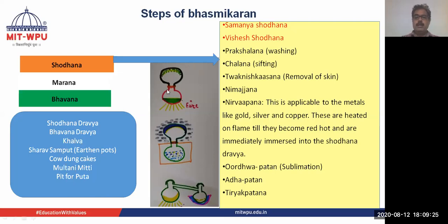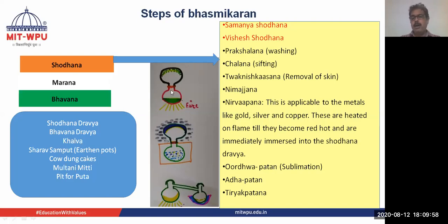In Urdhva Patan, two earthen pots are taken — one earthen pot and one in the inverted position. The drug is kept in the lower earthen pot and the edges are sealed with Multani Mitti, with cloth smeared in Multani Mitti wrapped around the edges. Then fire is applied. Vapors form and rise, and on top of the inverted pot we keep a weight closed, so condensation happens and vapors condense on the inner side of the upper earthen pot. This is the sublimation process.